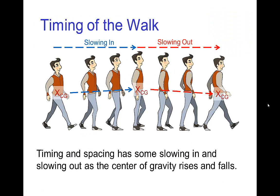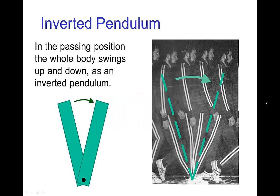This up and down motion affects the timing because the body tends to slow down rising up to the highest point, and then speed back up as it falls back down. If the highest point for the center of gravity is at the passing position, then from contact to passing position we tend to slow in, and then slow back out coming out of the passing position. One way to understand this is that the body swings up and then back down somewhat like an inverted pendulum.